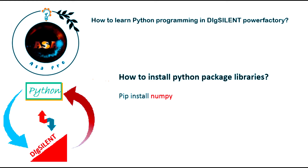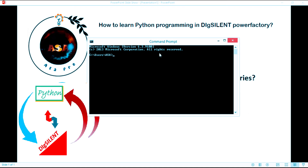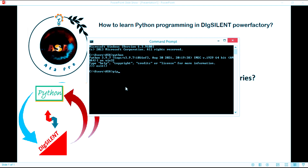Before that, it should be noted that Python must be recognized as an internal or external command in CMD. To check that, just type python and click Enter. If no error appears and you see the version of your Python, it means that Python is recognized. Then you can install the package by writing pip install followed by your package name — for example, pip install matplotlib — then press Enter and after a few seconds the package will be installed.